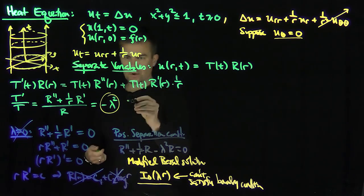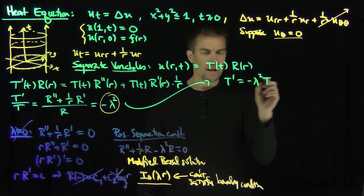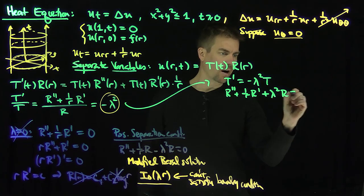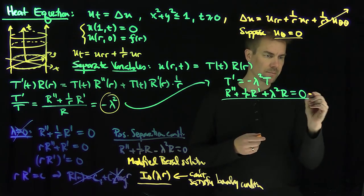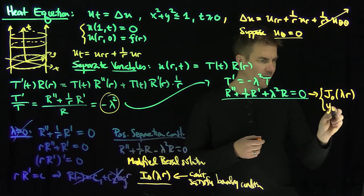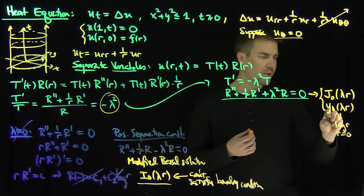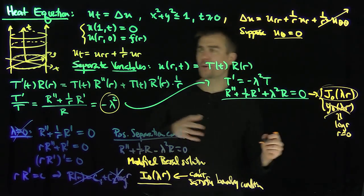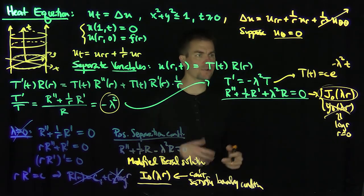With a negative separation constant, we get two equations: T' = −lambda² T, and R'' + (1/r) R' + lambda² R = 0. The T equation gives T(t) = C e^(−lambda² t). The radial equation is the Bessel equation of order 0 scaled by parameter lambda. The other solution, Y₀(lambda r) — the Neumann Bessel function — is unbounded at the origin, behaving like log(r) near r = 0, so we exclude it.